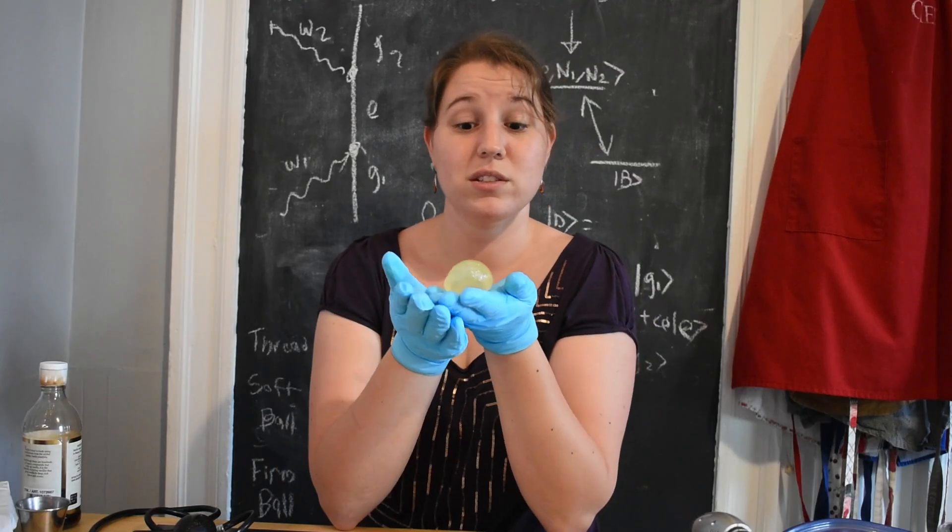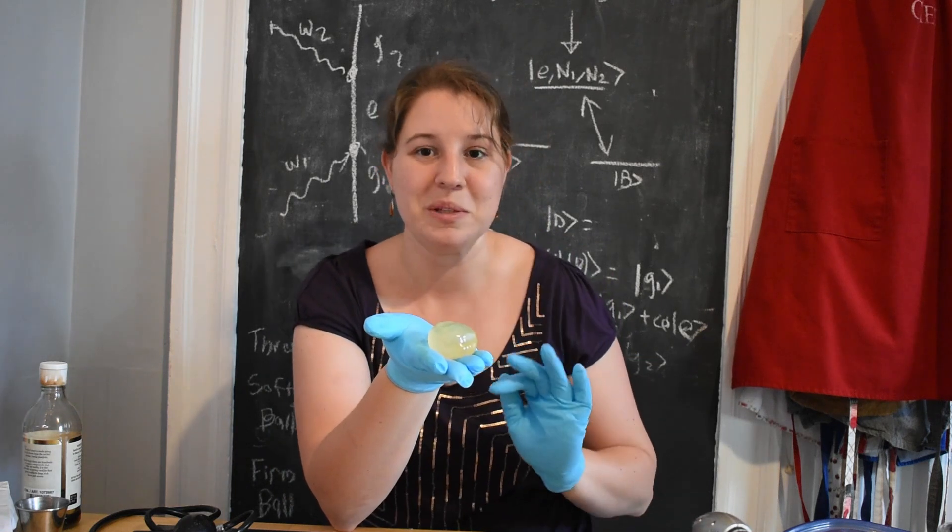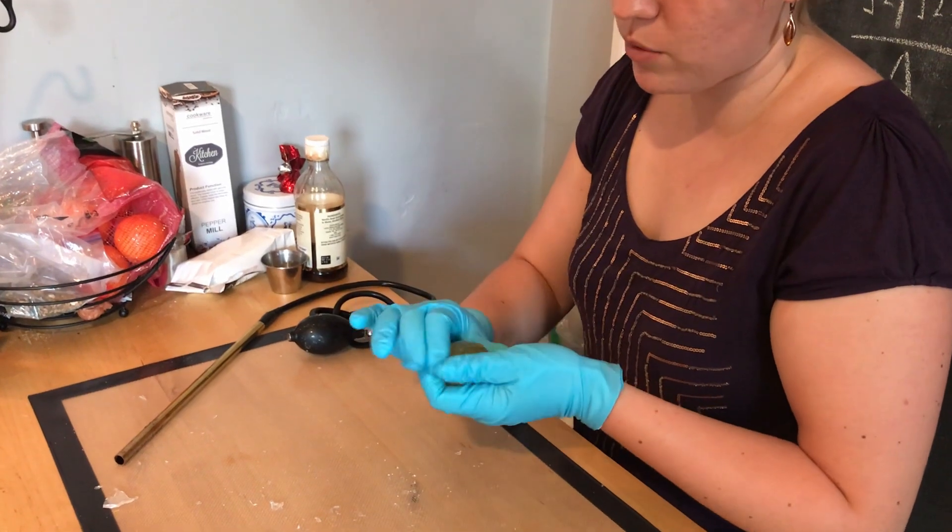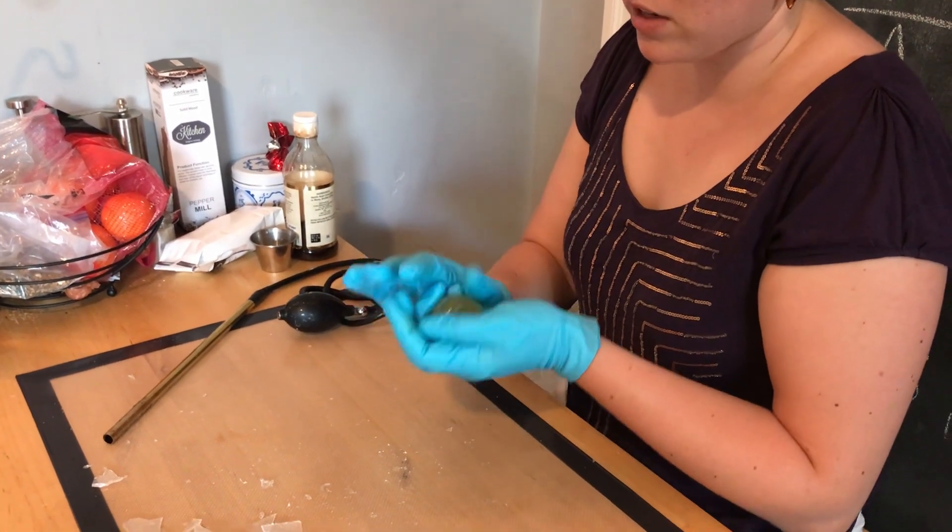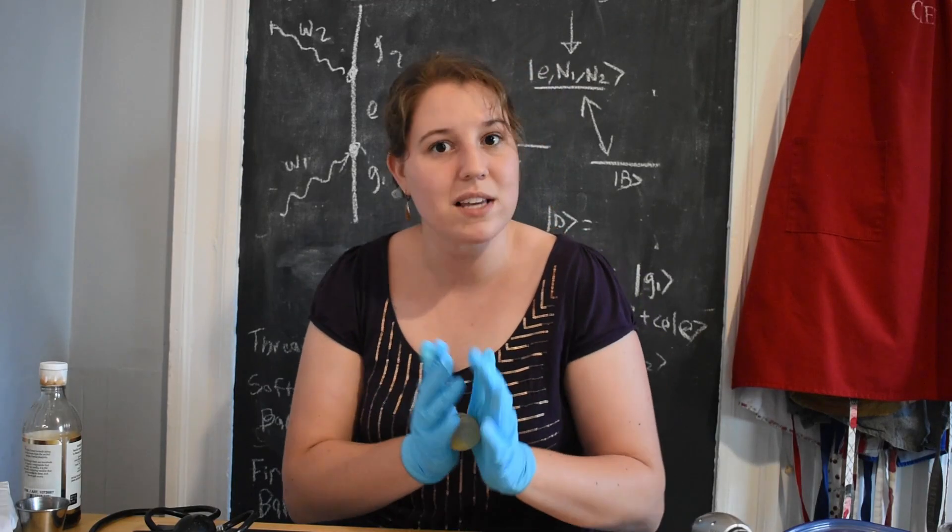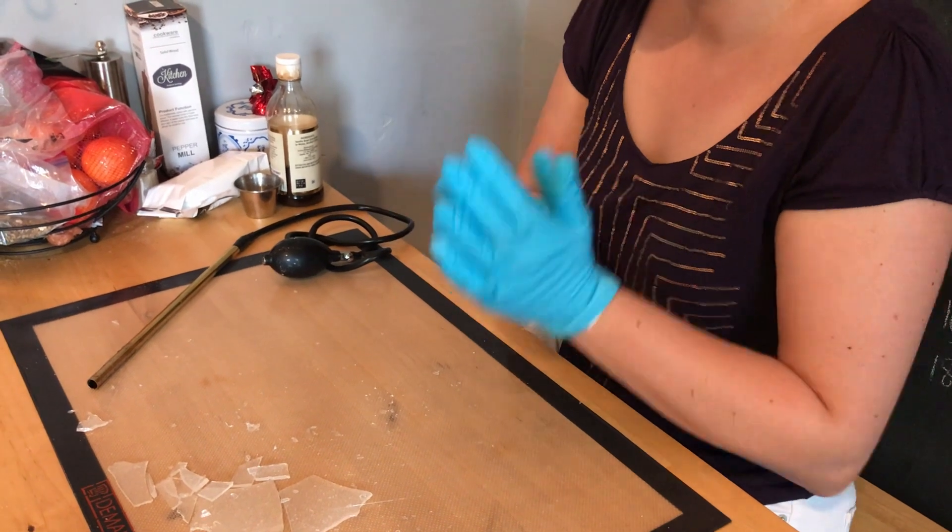So I have a ball of sugar glass, and it's a little bit different colored because I caramelized a little bit of the isomalt while melting it, which was an accident. But this means that we're able to shape it, and it's going to get harder and harder to shape the cooler it gets, because it is a glass and it does harden gradually. So I'm going to shape it into a ball.